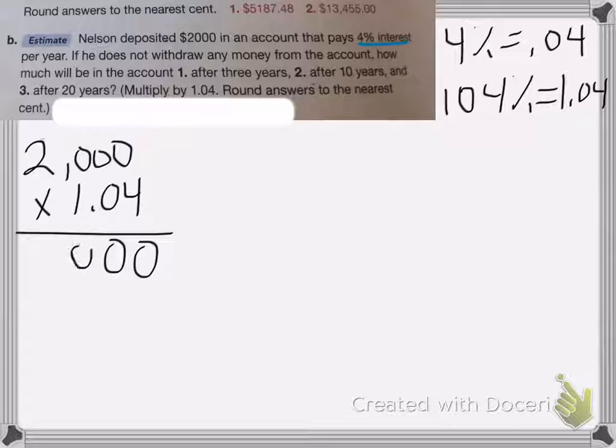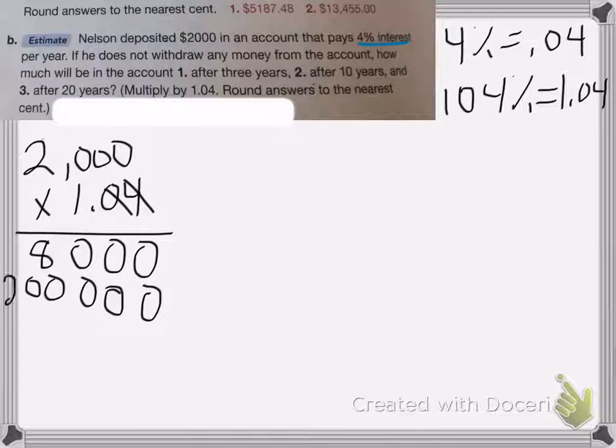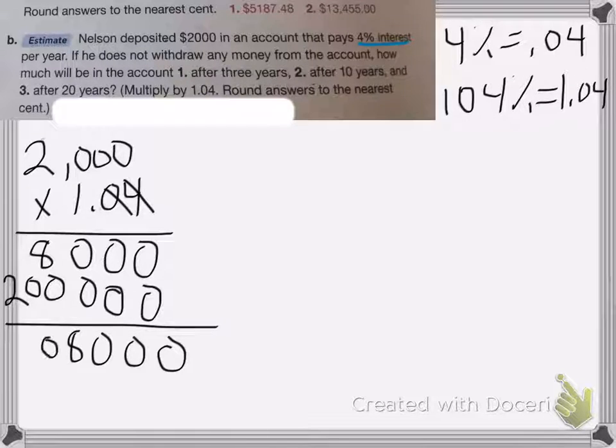So you get 0, 0, 0, 8. Add two 0s in my 1. 1, 2, 3, 2. Add those together. And the decimal place. 1, 2, 1, 2. So he ends up with $2,080 total.